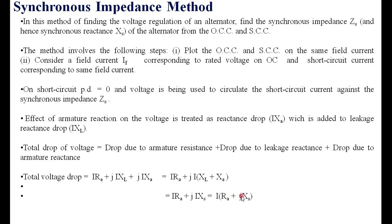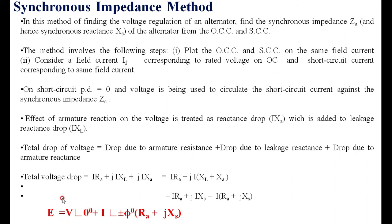The generated EMF E can be calculated as E = V∠0° + Ia∠±φ × (Ra + jXs). The terminal voltage V is taken as a reference at angle 0 degrees. The current Ia lags, leads, or is in phase with V depending on the load. Adding the synchronous impedance drop to the terminal voltage gives E. That is why it is called the synchronous impedance method.